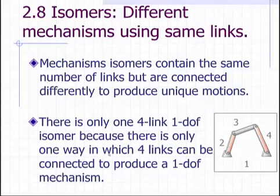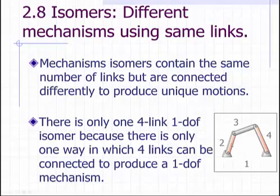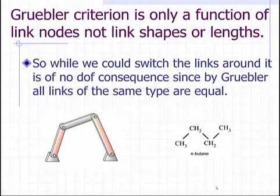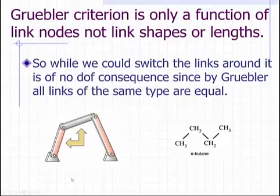That one way is shown here at the right. We have link one at the bottom as the ground link, link two here, link three for the link at the upper middle, and link four for the link on the right. There is only one way these links can be combined to create a one-degree-of-freedom mechanism. If we were to switch links two and three, we must remember that Grubler's criterion is only a function of link nodes, not link shapes or lengths, so by Grubler all links of the same type are equal.